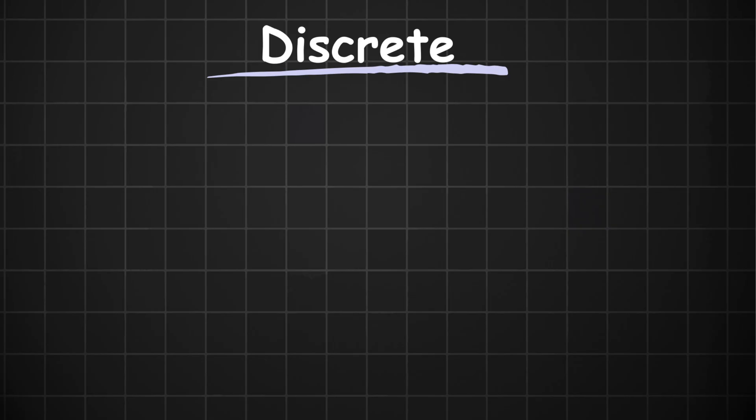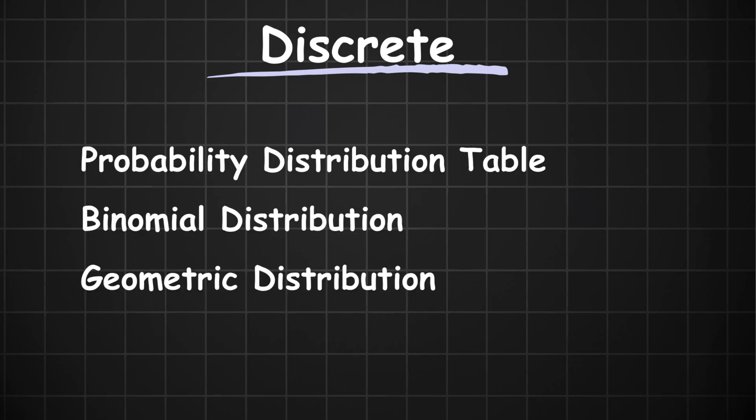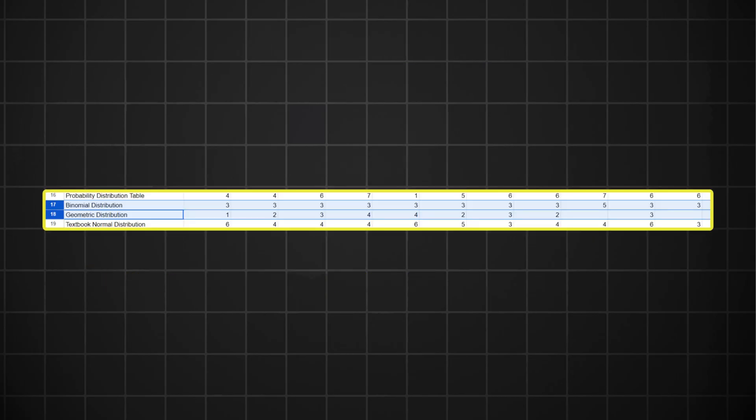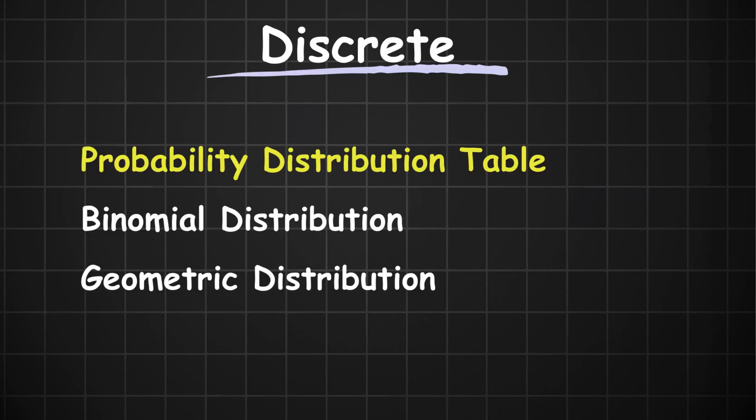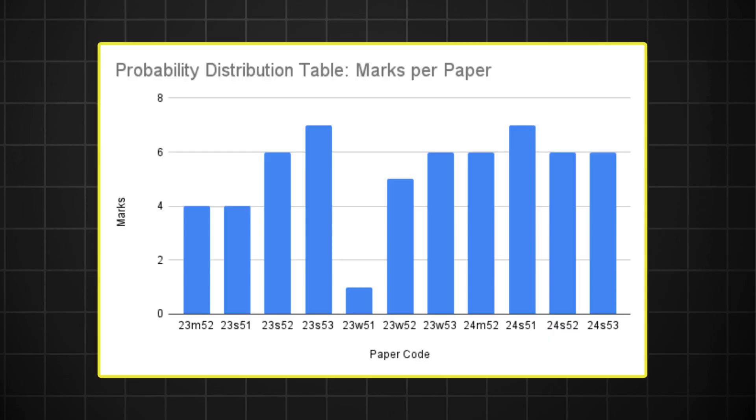Moving on to discrete random variables, there's not much to say here. It splits very nicely into the probability distribution table, the binomial distribution, and the geometric distribution questions. Cambridge always tries to fit all the distributions in the paper, so expect the binomial and geometric distributions to show up. The probability distribution table is expected to show up as well, given its perfect attendance record in the past two years. Discrete random variables is kind of like the series of Stats 1, because every question type from this topic will probably show up in the exam.